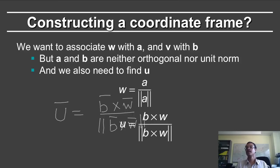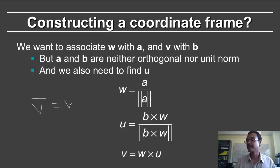The final step we need here is to find the vector v. But given w and u, v is given by w cross product with u. In this way you have created a complete coordinate frame given two vectors that need not be unit norm and that need not be orthogonal.